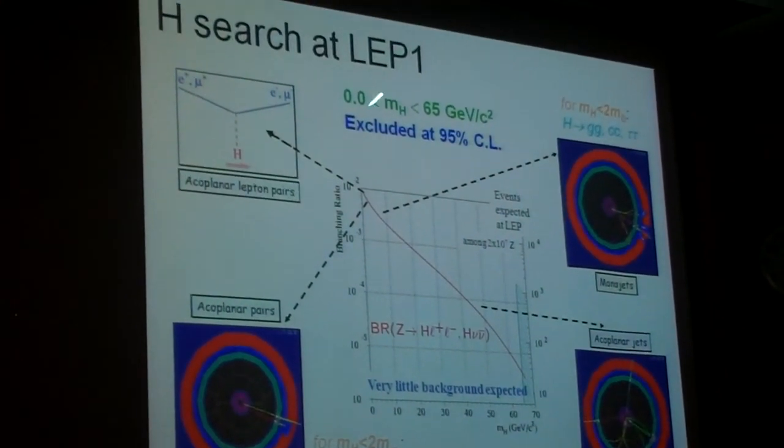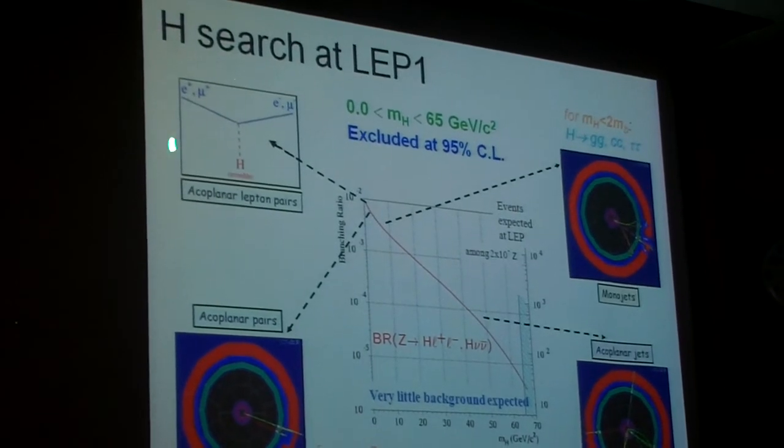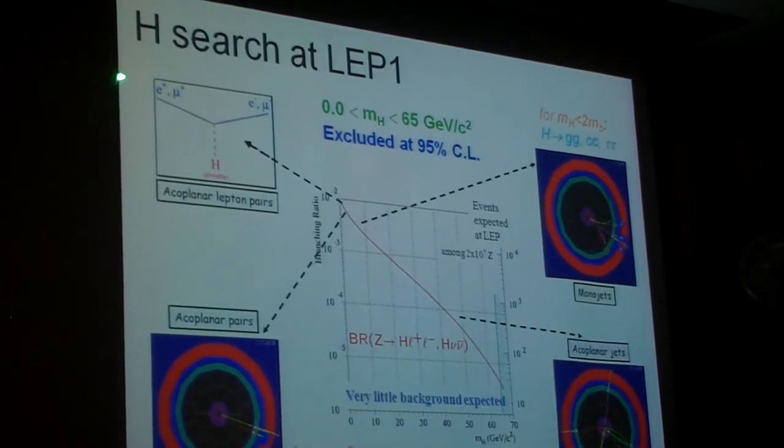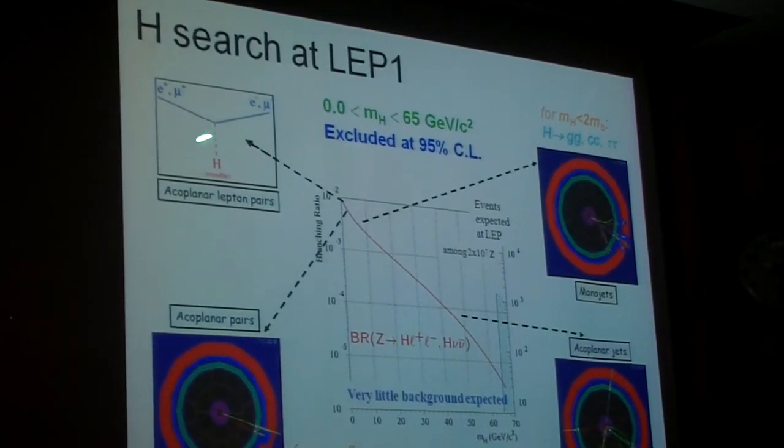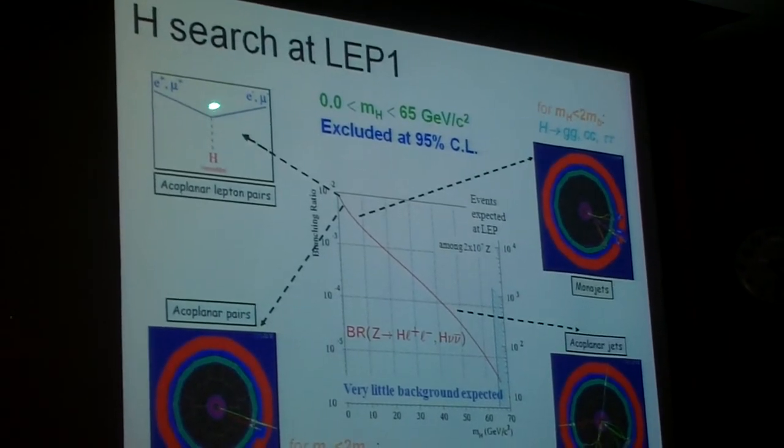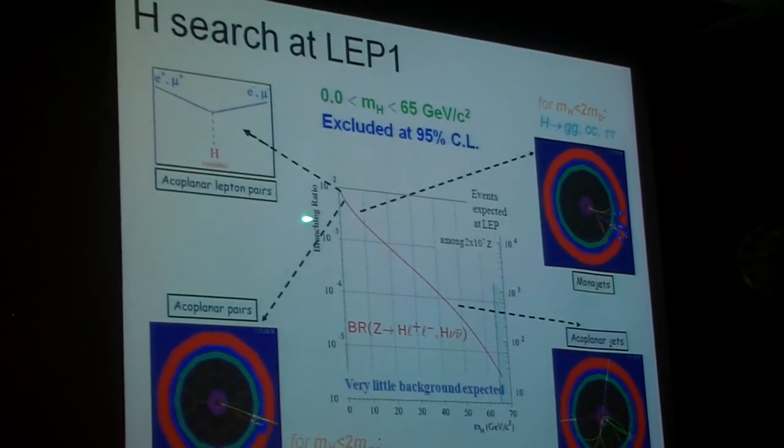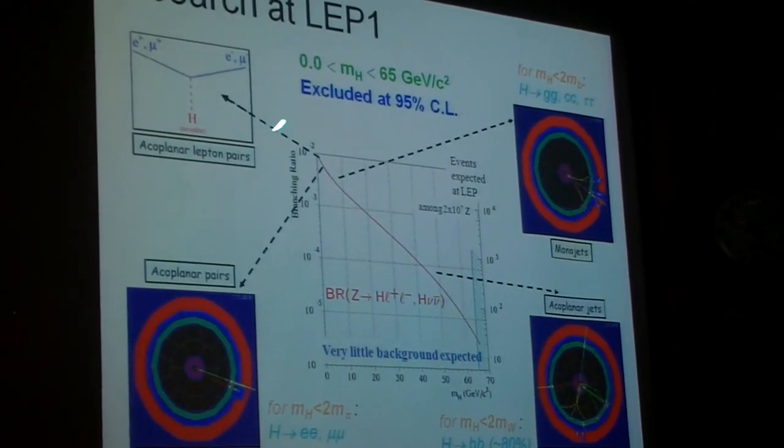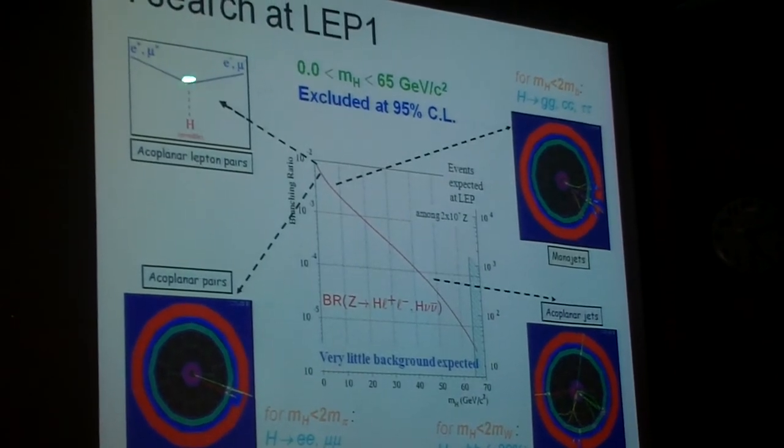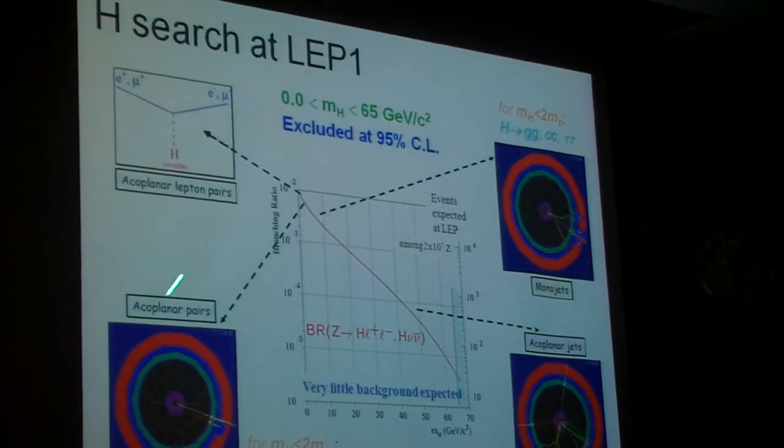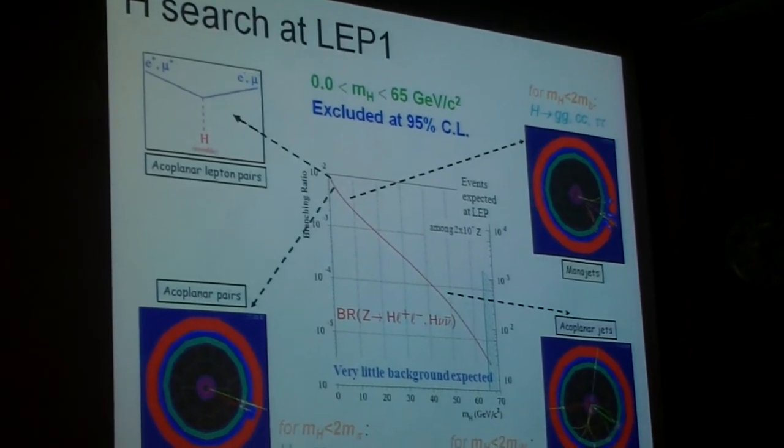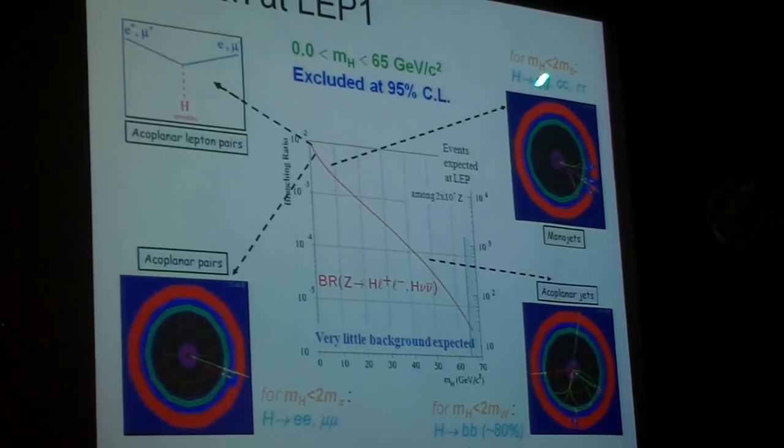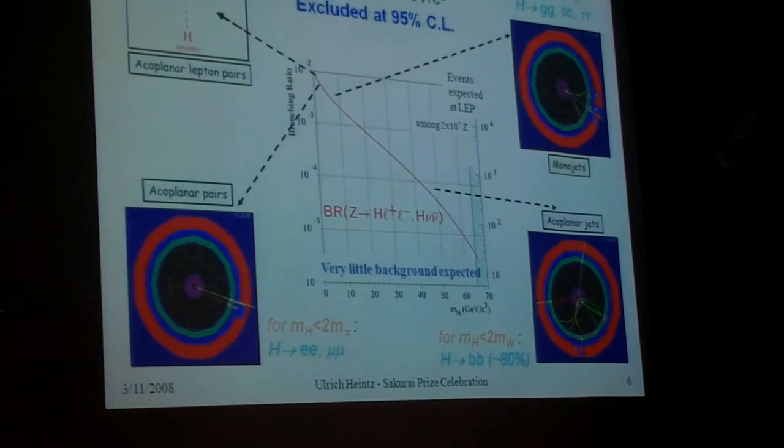At LEP 1, searches for very low mass Higgs bosons were done by looking for acoplanar lepton pairs, so these come from the Z decay, and the Higgs, if it's very light, could be having a relatively long lifetime and actually escaping the detector, so it's not visible. You just look for the signature of acoplanar electron pair. When the mass goes up, the Higgs may decay to e+e-, mu+mu-, further up in mass, it decays to taus.